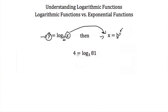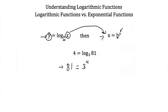So if I had 4 is equal to the log base 3 of 81, I take this 81 outside, I keep my base, and then what is outside becomes the exponent of that base. So 4 is equal to the log base 3 of 81 is the same as writing 81 is equal to 3 to the fourth power. So these two expressions mean exactly the same thing.